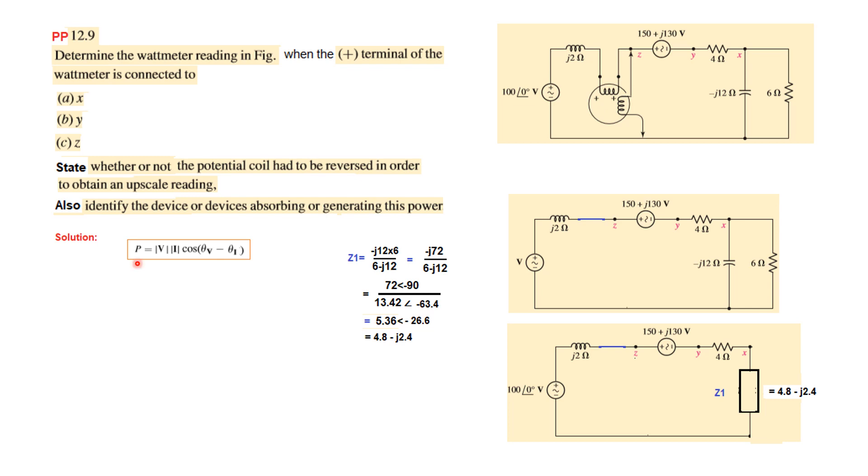This is the formula for power, so we have to find I. We know V, we need to know I, and we need to know the angles. First of all, we'll find the current in the circuit. This is the loop for current, and by KVL...